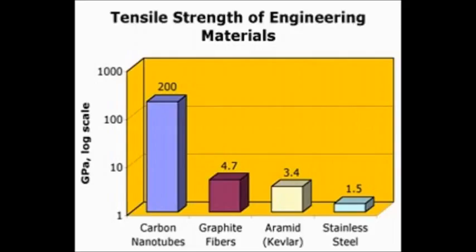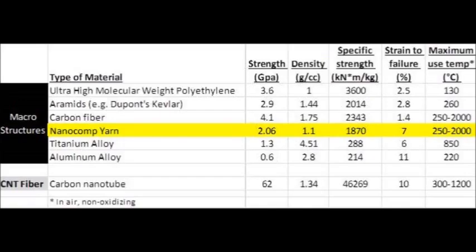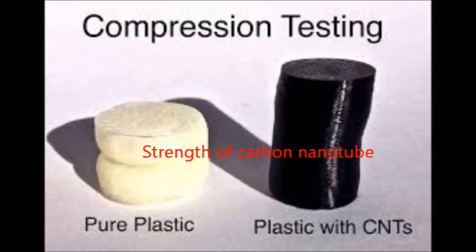So why carbon nanotubes? Carbon nanotubes have 200 times the strength and 5 times the elasticity of steel, 5 times the electrical conductivity, 15 times the thermal conductivity, and 1,000 times the current capacity of copper at almost half the density of aluminum.